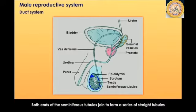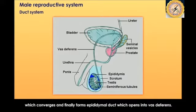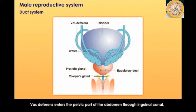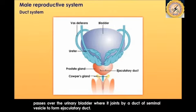Both ends of the seminiferous tubules join to form a series of straight tubules, which converge and finally form the epididymal duct that opens into the vas deferens. The vas deferens ultimately enters the pelvic part of the abdomen through the inguinal canal, passes over the urinary bladder, and joins with the duct of the seminal vesicle to form an ejaculatory duct.